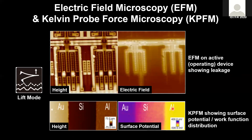This allows us to find a defect area. A second example is a work function or surface potential map on a silicon wafer covered by two different metals. Different metals have different work functions and that's exactly what we extract in the surface potential or KpFM mode — we can measure that pretty accurately.